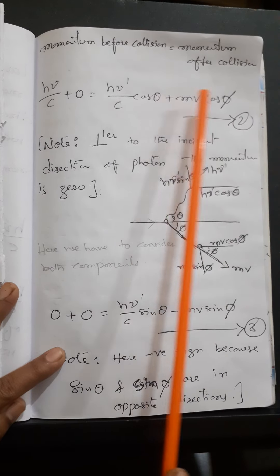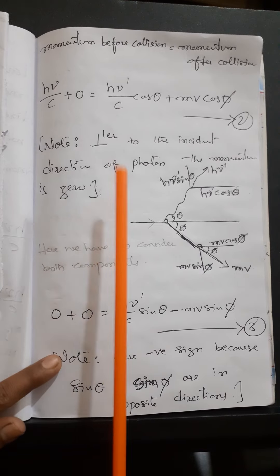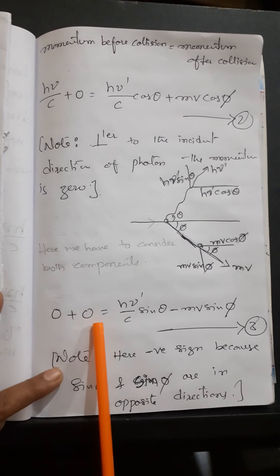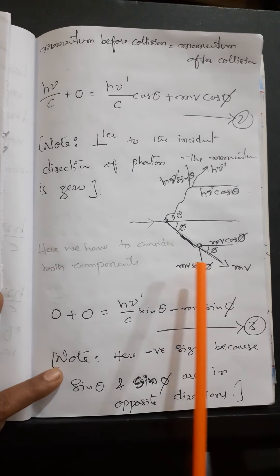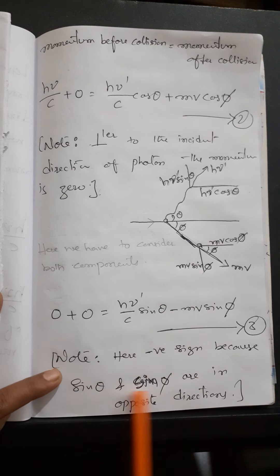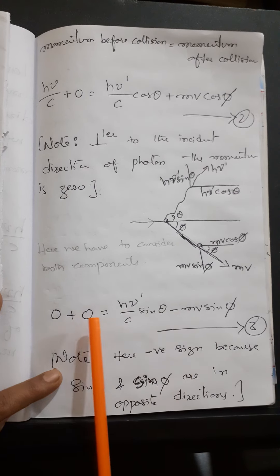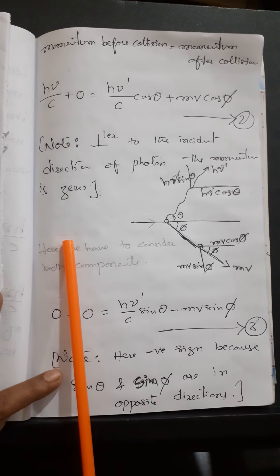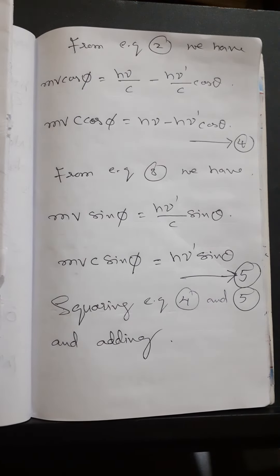Perpendicular to the direction of the incident photon, the momentum before collision is zero. After collision, the photon has component h·nu'·sinθ/c and the electron has mv·sinφ, but these are in opposite directions, so we introduce a negative sign. The equation perpendicular to the incident photon is: 0 = h·nu'·sinθ/c − mv·sinφ. Let this be Equation 3.